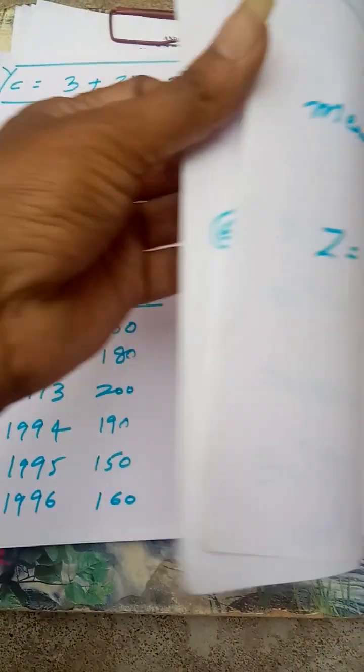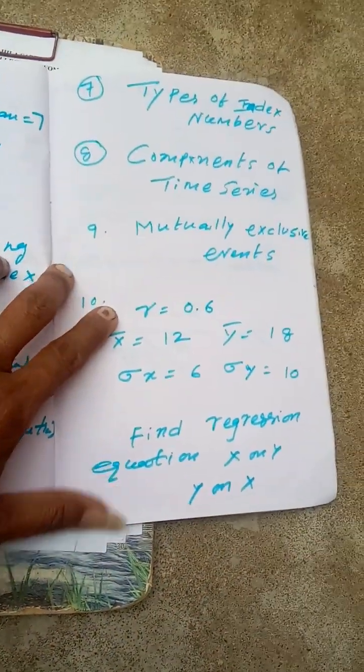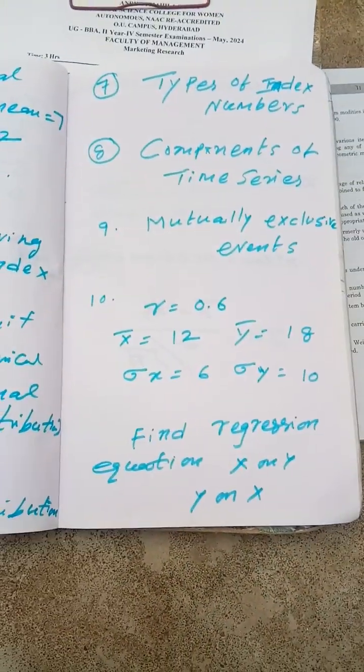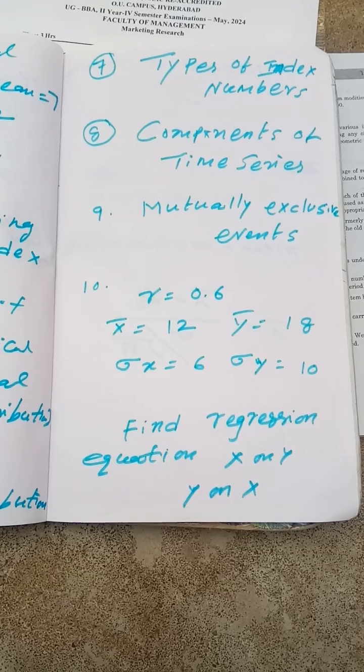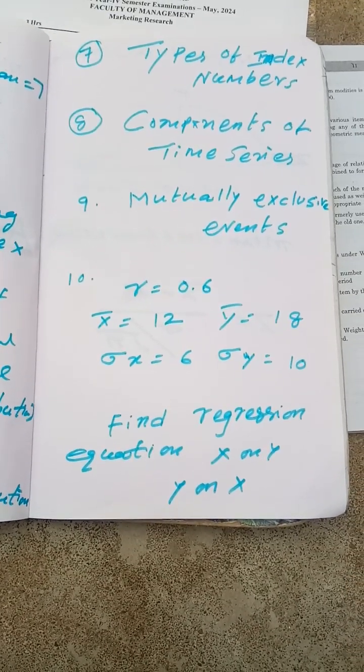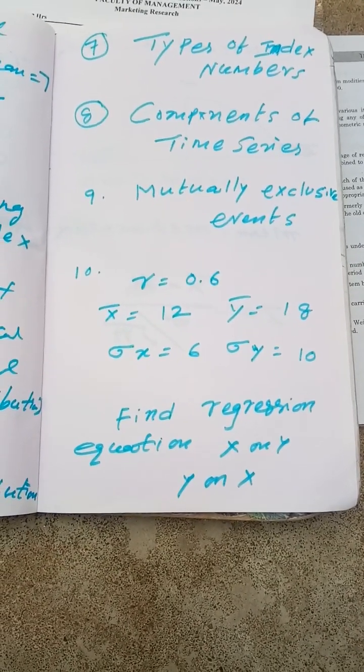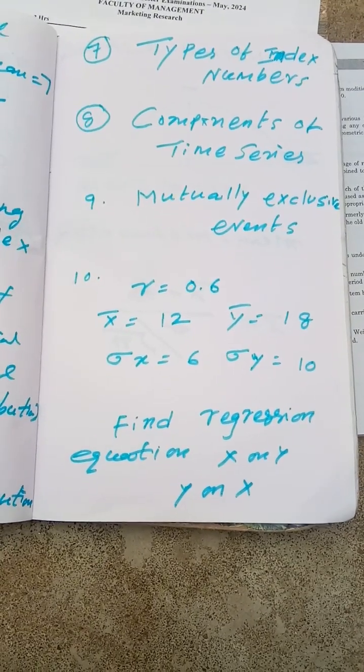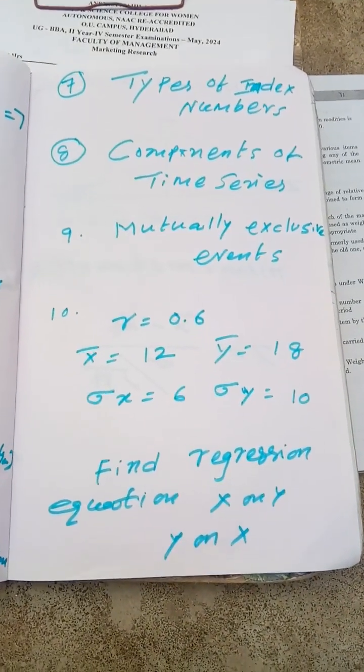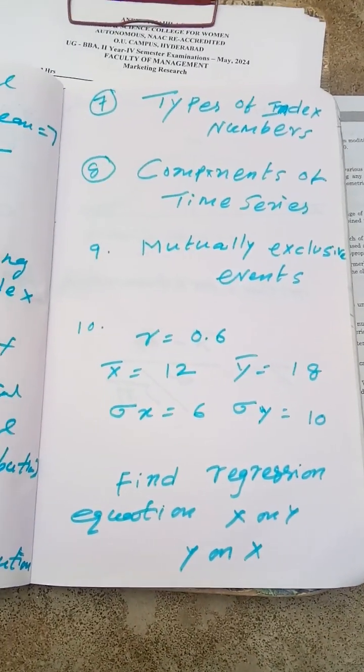Central limit theorem, types of index numbers, price index, value index. This is classification, that is classification. How many, which types?